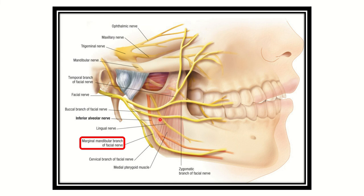Now let's look at a picture. Here we can see the mandible and the submandibular gland lies in this area. We can see some structures here, such as the terminal branch of the facial nerve, and here is the marginal mandibular nerve — it passes very close to the mandible. We can also see other branches such as the buccal branch and temporal branches.